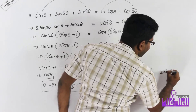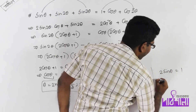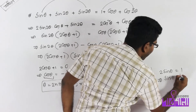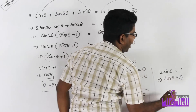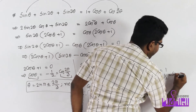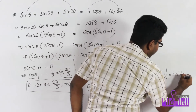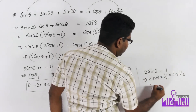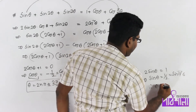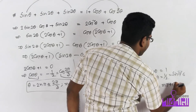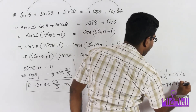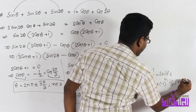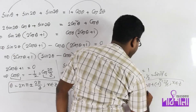We arrive at 2 sin θ equal to 1, so sin θ equal to 1/2, and 1/2 means sin(π/6). So sin θ equal to sin α, giving θ equal to nπ plus minus (−1)^n α, where n belongs to Z.